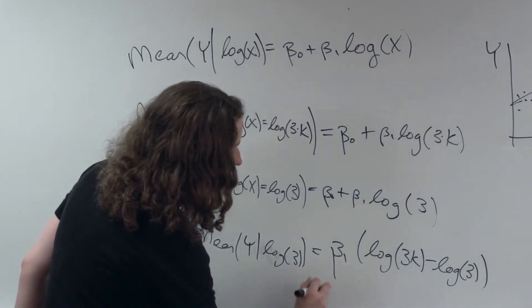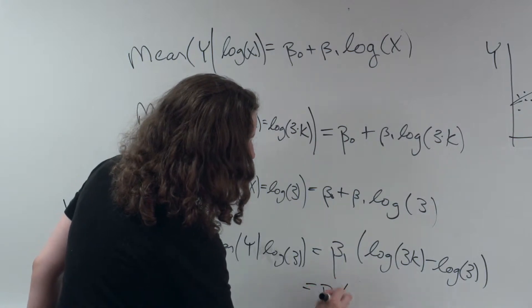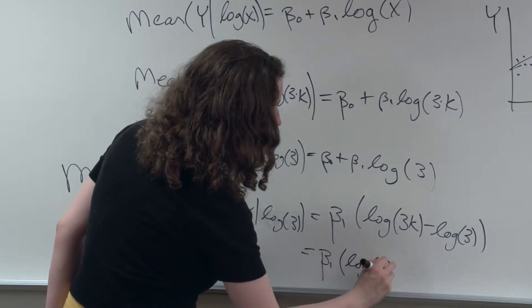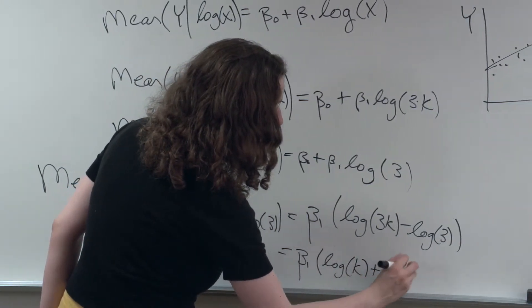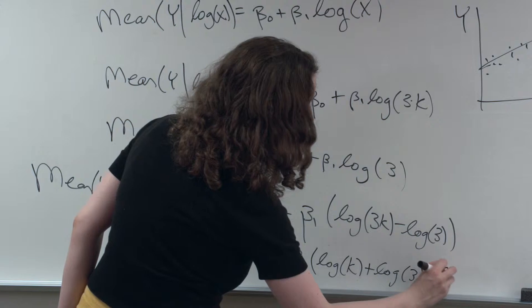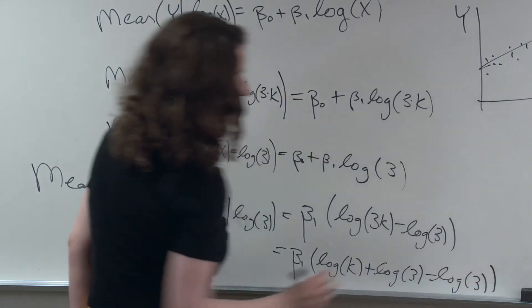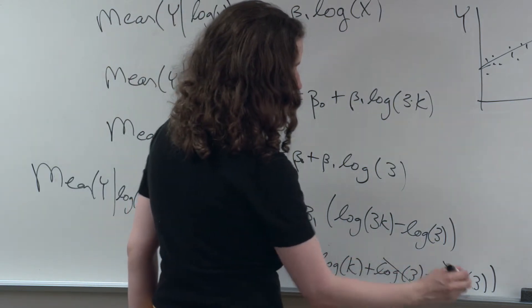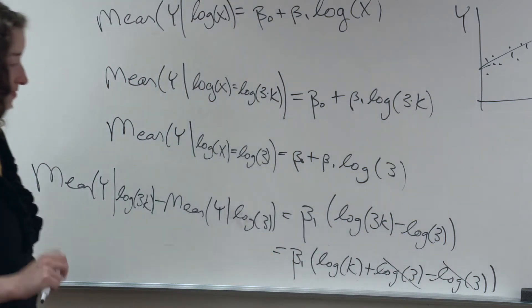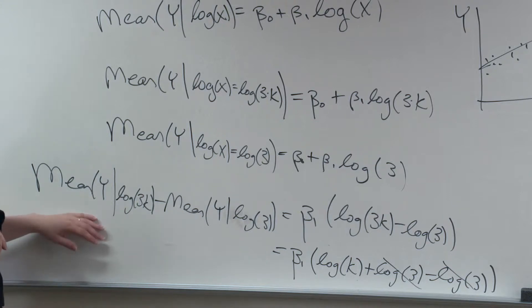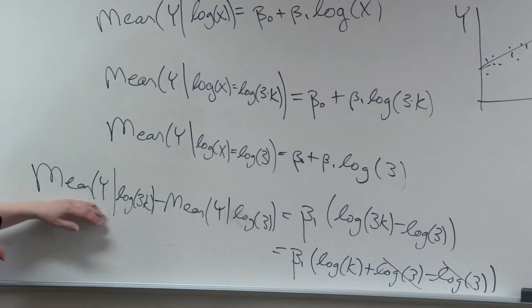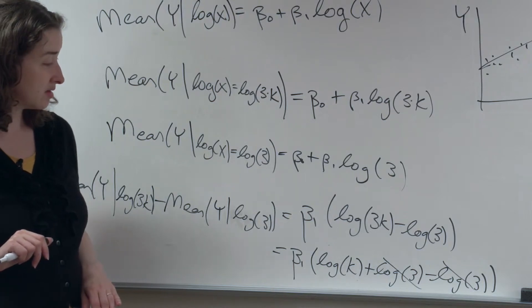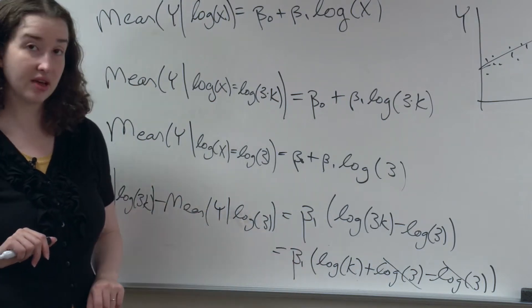So continuing with those log rules: the log of 3k is equal to the log of k plus the log of 3. And then I've got this minus log of 3 down here. So what happens? The 3's cancel. The statement we have here is that the difference in means of y is equal to beta 1 times the log of k.